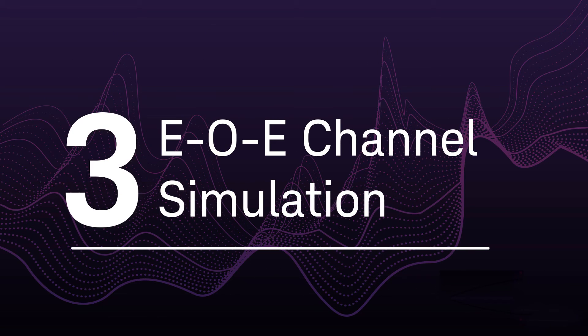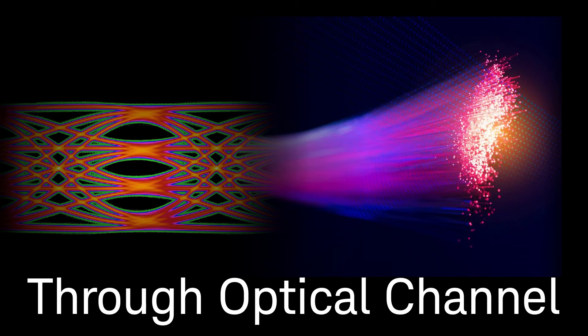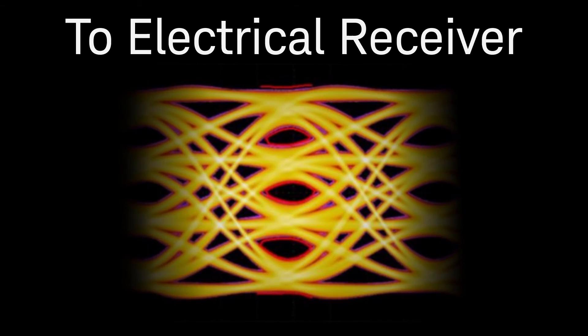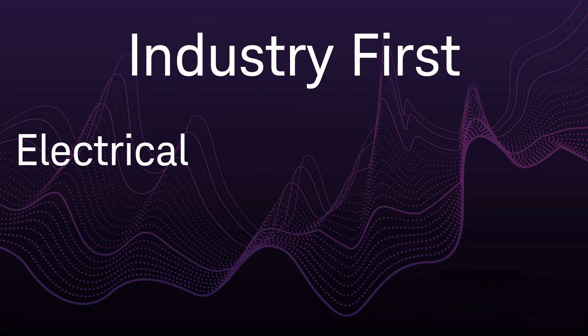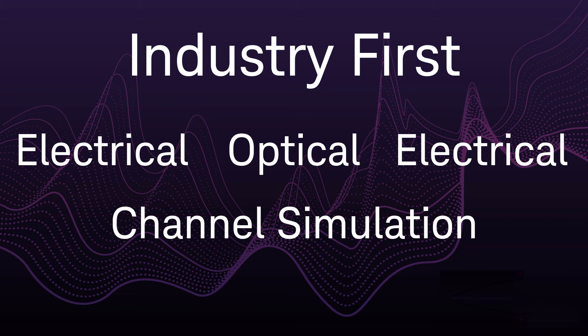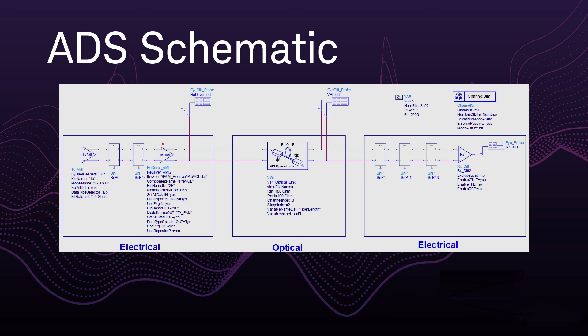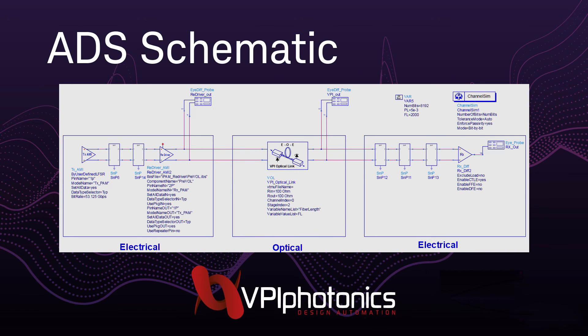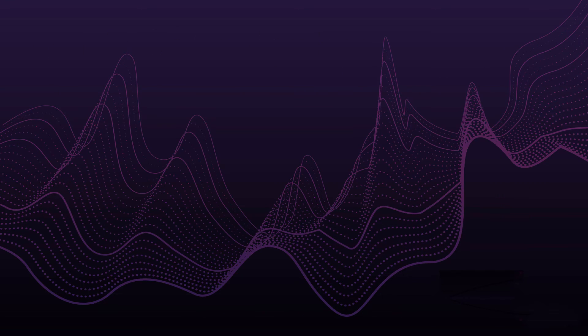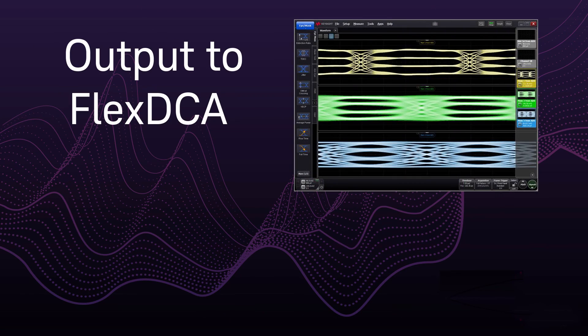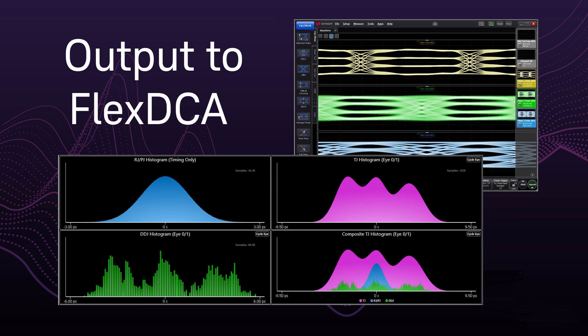Number three: EOE channel simulation. EOE channel starts with an electrical transmitter, through an optical fiber channel, and ends with an electrical receiver. Introducing the industry-first electrical-optical-electrical channel simulation. With VPI optical link, you can send your electrical simulation data to VPI Photonics for optical simulation. The results can be shown in ADS data display or output to Flex DCA for advanced eye and jitter analysis.